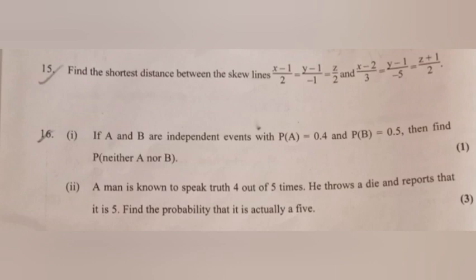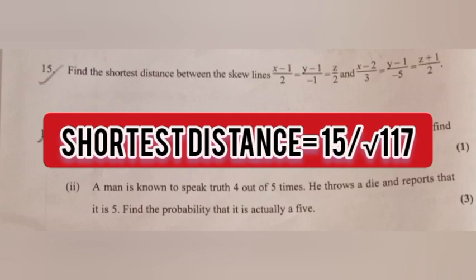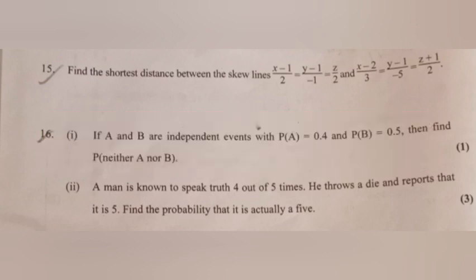Question 15: Find the shortest distance between the skew lines (x−1)/2 = (y−1)/−1 = z/2 and (x−2)/3 = (y−1)/−5 = (z+1)/2. Answer: Shortest distance = 15/√117.